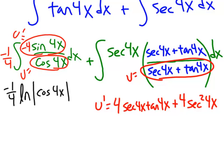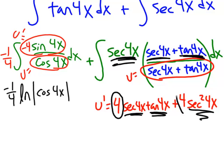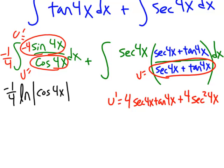Or at least a constant multiple of our numerator. We see secant 4x tangent 4x. Secant 4x times tangent 4x. We see secant squared 4x. Well, we see secant times another secant. There's our secant squared. The only thing we're missing are those 4s. So, let's go ahead and put a 4 up here in the numerator. Let's put a 1 fourth out front to balance it out. And we've got our U prime now up top.